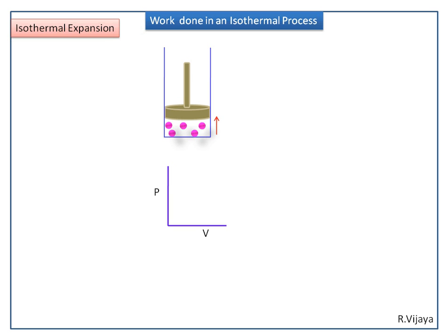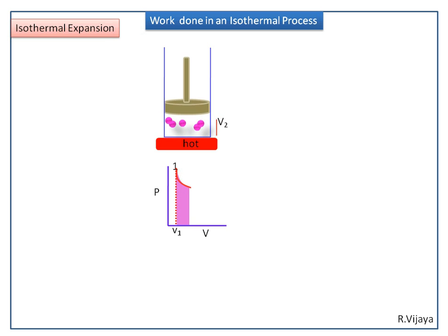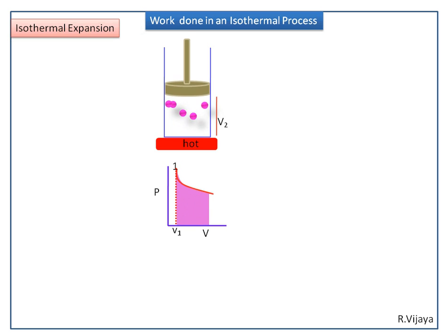This is the volume of gas inside the cylinder, marked as V1. When we supply heat from the surrounding to the system, the gas expands from V1 to V2.